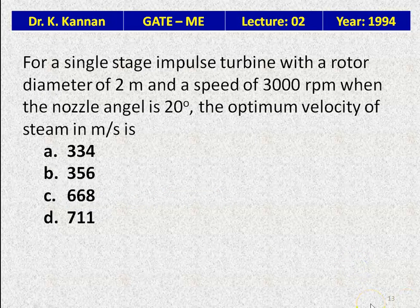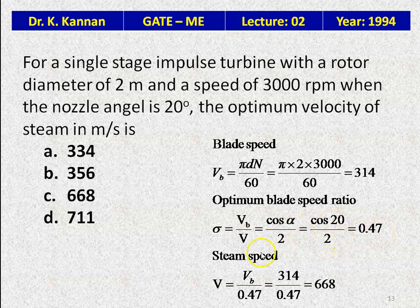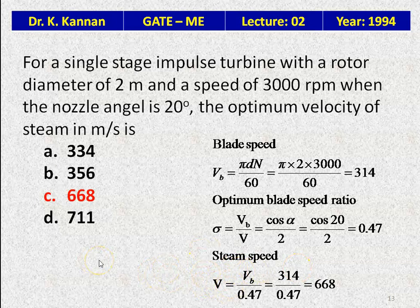For a single-stage impulse turbine with rotor diameter 2 m and speed 3000 rpm, when nozzle angle is 20°, the optimum velocity of steam is calculated as: blade speed Vb = πdn/60 = π × 2 × 3000/60 = 314 m/s. Optimum blade speed ratio σ = Vb/V = cos(α)/2 = cos(20°)/2 = 0.47. Therefore steam speed V = 314/0.47 = 668 m/s.